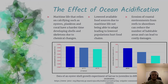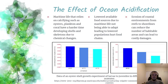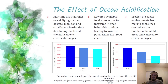Going back to the information, the effects of ocean acidification are very severe. Maritime life that often relies on calcifying, such as oysters, plankton, and coral, will have a hard time developing their shells and skeletons due to the chemical change, stunting their growth. There will also be lower available food sources due to maritime life not being able to adapt, leading to lower populations across the food chain from the producer to the consumer. Third, there will be mass erosion on coastal environments from reefs to shorelines that will reduce the number of habitable areas for both humans and maritime life, and can lead to very costly damages.